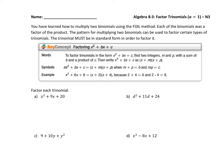Algebra Unit 8, Lesson 3, Notes 3: Factor Trinomials when A equals 1. You have learned how to multiply two binomials using the FOIL method. Each of the binomials was a factor of the product. The pattern for multiplying two binomials can be used to factor certain types of trinomials. The trinomial must be in standard form in order to factor it.